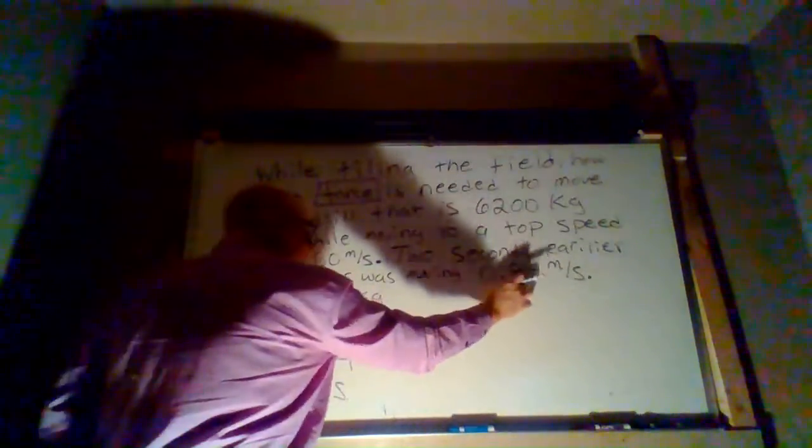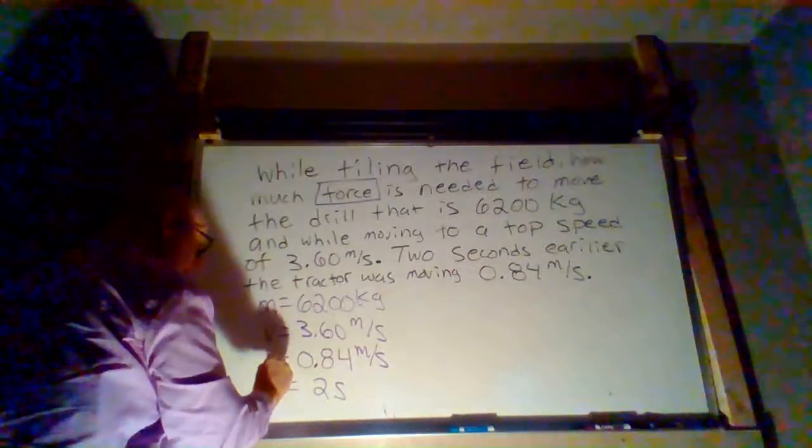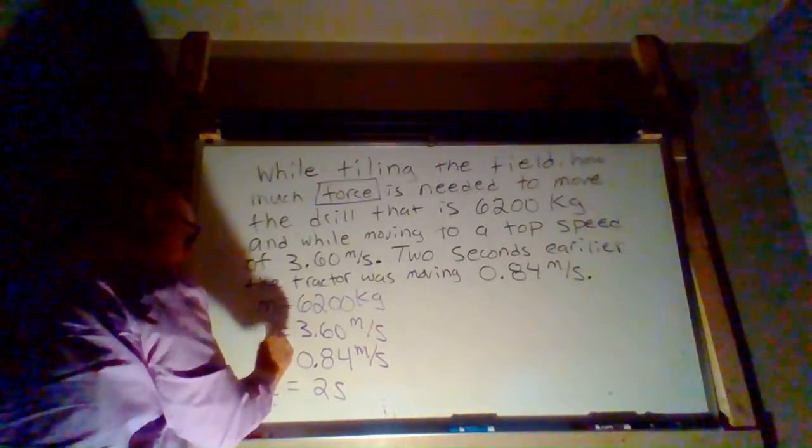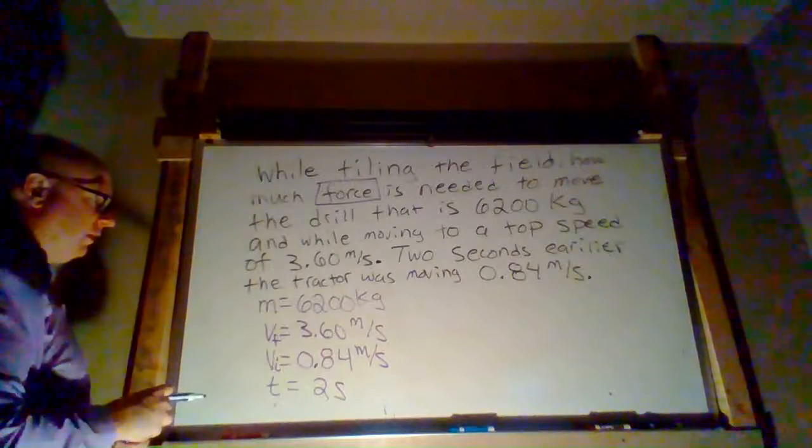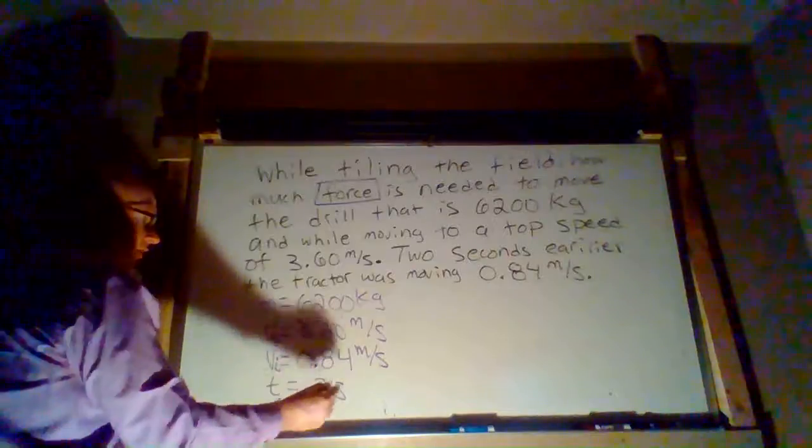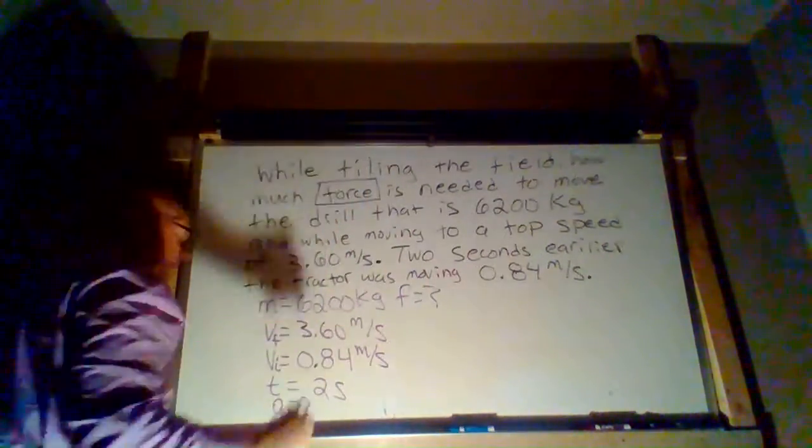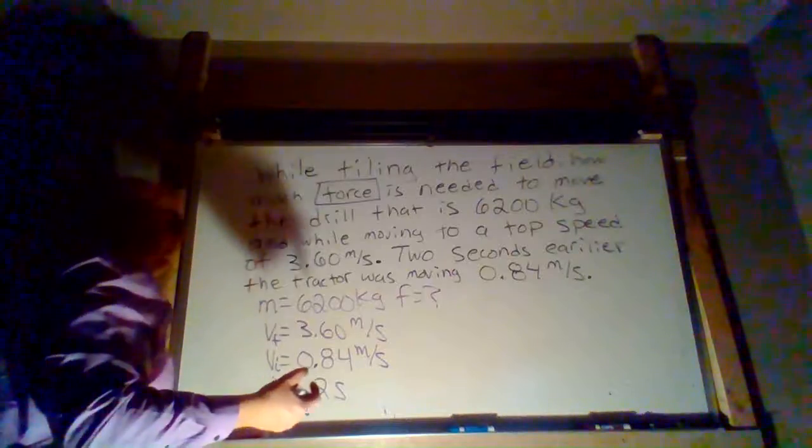So what that means is this came first. So if it came first, this is an initial velocity and then this is a final velocity. Once you put this in your equation, this will give you your acceleration because we didn't know that. We also did not know the force. We're looking for that.